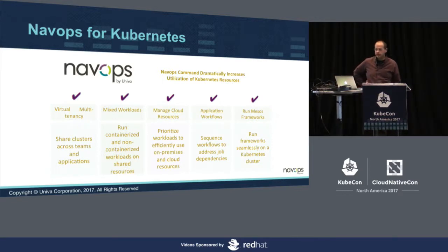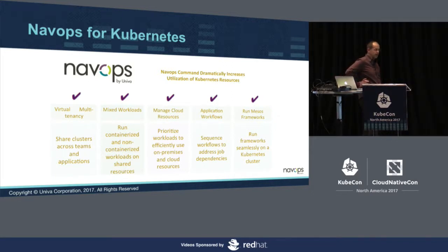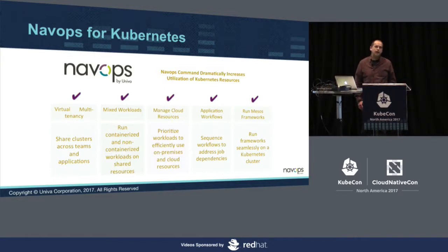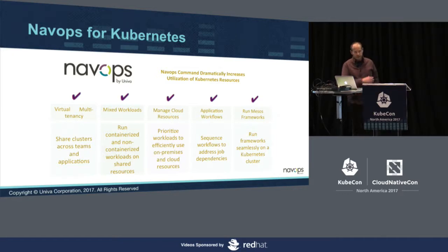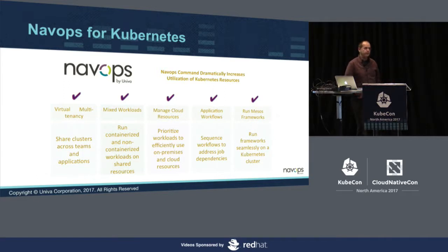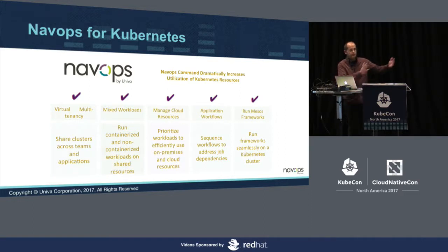That entails things like managing resource scarcity, allowing you to run multiple tenants on the same Kubernetes cluster without them stepping on each other's toes. Running mixed workloads — both containerized and non-containerized — and part of it is also, as we will see in this talk, Mesos frameworks, all running on the same Kubernetes cluster. We also support things like application workflows where you have dependencies so that you run phase one of your application, then phase two — we provide solutions for all of that.